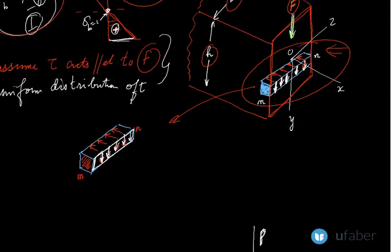The vertical shear stress is uniformly distributed on the vertical face of the element. We also know that shear stress on one face brings about a complementary shear stress of equal magnitude on a perpendicular face. The perpendicular face to the vertical face is the horizontal face of the element.